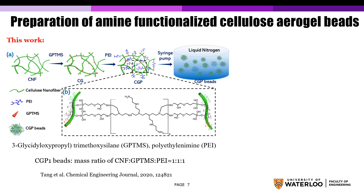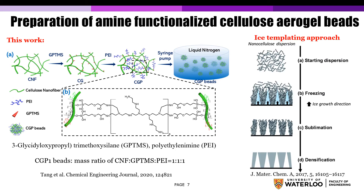The imine-functionalized cellulose was prepared by cross-linking polyethylenimine onto cellulose nanofibrils using the epoxy silane cross-linker GPTMS. The cross-linked mixture was then dropped into liquid nitrogen to form beads with a diameter of around 3 to 4 mm. The beads were further subjected to freeze drying to produce the cellulose aerogel beads. The porous structure in the beads was constructed using an ice-templating approach, and the mechanism of this technique is shown in the diagram on the right.